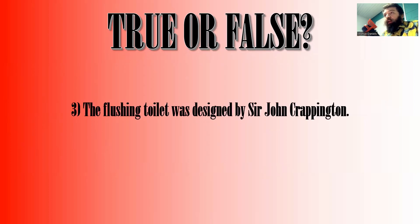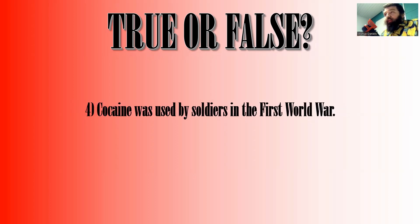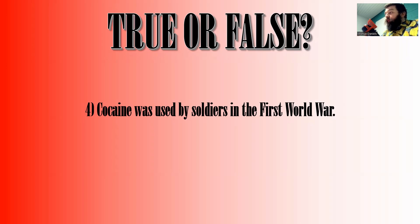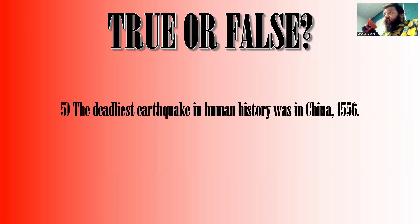True or False number three: the flushing toilet was designed by Sir John Crappington. True or False number four: cocaine was used by soldiers in the First World War. And the final question, number five: the deadliest earthquake in human history was in China, 1556 — true or false?